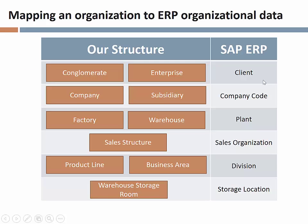The highest level of organizational entity in SAP ERP is the client — we might refer to that as a conglomerate or enterprise. A company code in SAP ERP equates to what we might in common English call a company or a subsidiary. The term company code sounds a bit odd; you might think of it simply as a company, but SAP specifically calls it a company code.